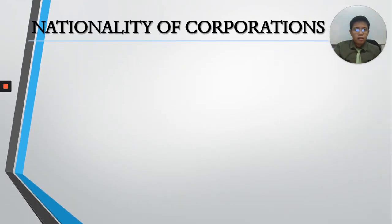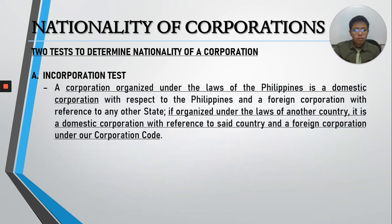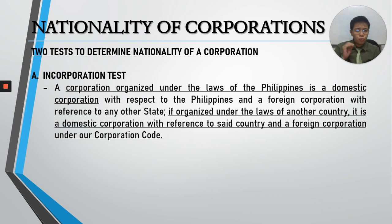Let's begin with the nationality of corporations — how to determine the nationality of a corporation. There are two tests: the incorporation test and the control test. The incorporation test provides that if a corporation is organized or incorporated under the law of the Philippines, it is a domestic corporation. If incorporated under the laws of a foreign country, it is a foreign corporation. It depends on where it was incorporated.